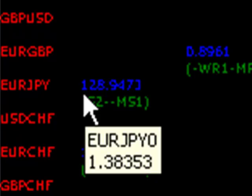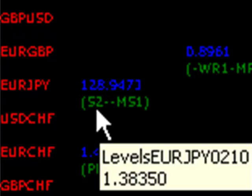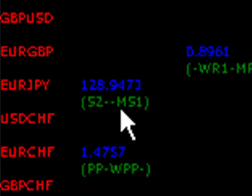If we look at this level here, it's saying on EUR/JPY at 128.94, we have a twin confluence made up of the daily S2 and the monthly S1 pivot level. The red pivot levels represent triple pivot confluences.